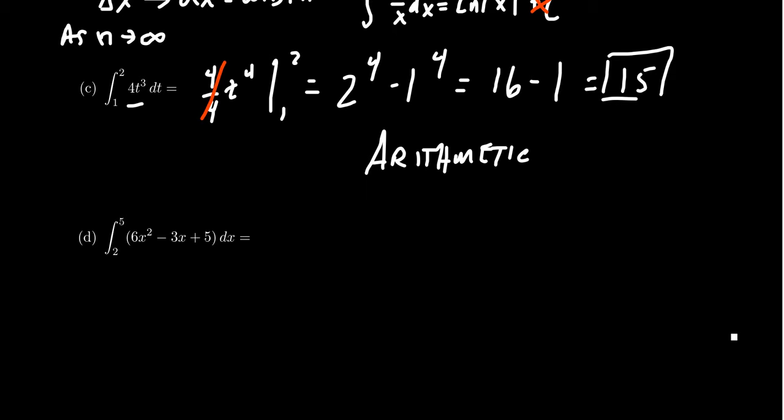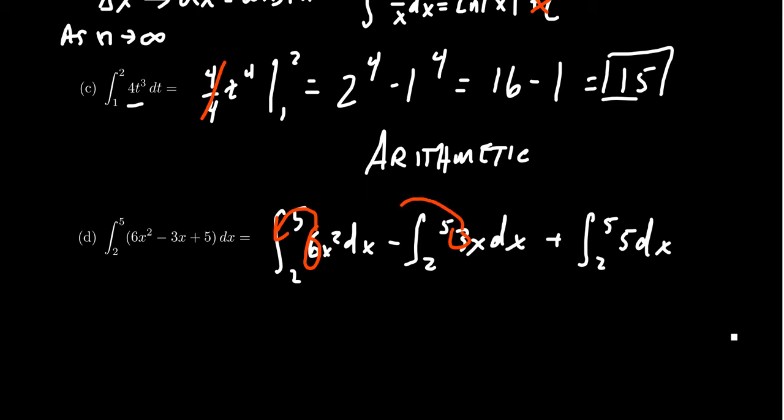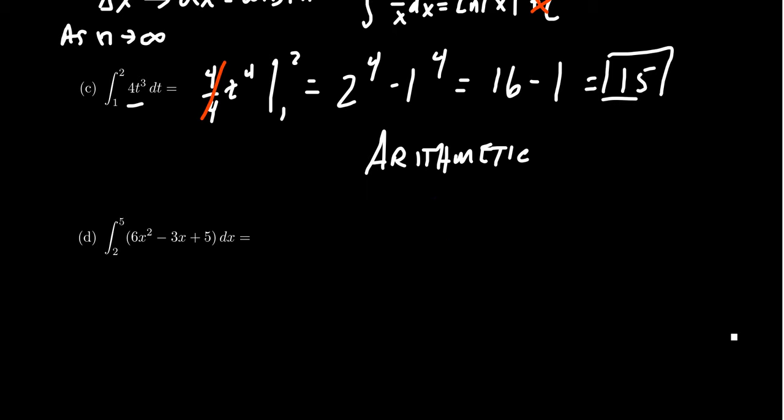For this last example, if we want to integrate from 2 to 5 the polynomial 6x^2 - 3x + 5, by properties of integrals, we can actually break this up into three different integrals. We can take the integral from 2 to 5 of 6x^2 dx minus the integral from 2 to 5 of 3x dx, plus the integral from 2 to 5 of 5 dx. But honestly, when people work through these things, that's not exactly how we consider this. We just do our antiderivative in line.